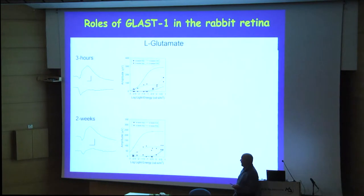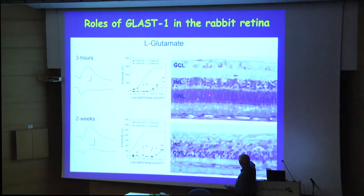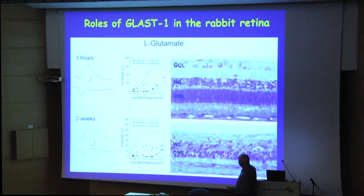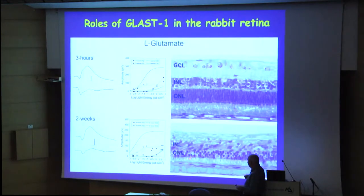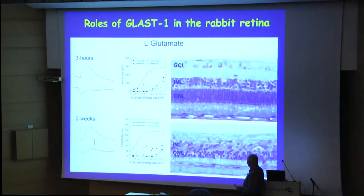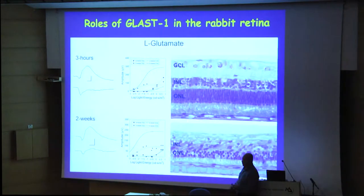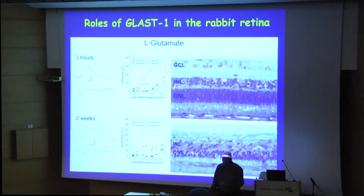Looking at retinal sections: the normal eye shows nuclei of photoreceptors, the inner nuclear layer with bipolar, horizontal, and amacrine cells, and the ganglion cell layer. In the injected retina there are few nuclei in the outer nuclear layer, no inner or outer segments, death of cells in the inner nuclear layer, and almost no ganglion cell layer. This retina is definitely damaged compared to the control.